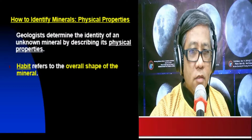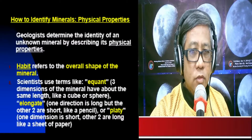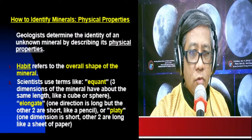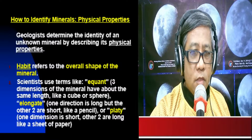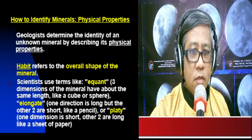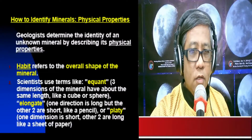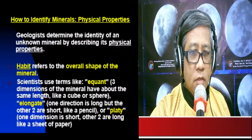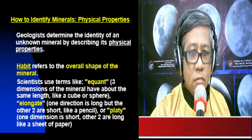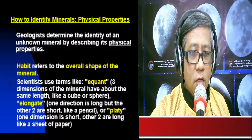Habit refers to the overall shape of the mineral. Scientists use the following terms to describe it: equant — the mineral has three dimensions of about the same length, like a cube or a sphere; elongate — the mineral has one long direction while the other two are short, like a pencil; and platy — the mineral has one short dimension while the other two are long, like a sheet of paper.